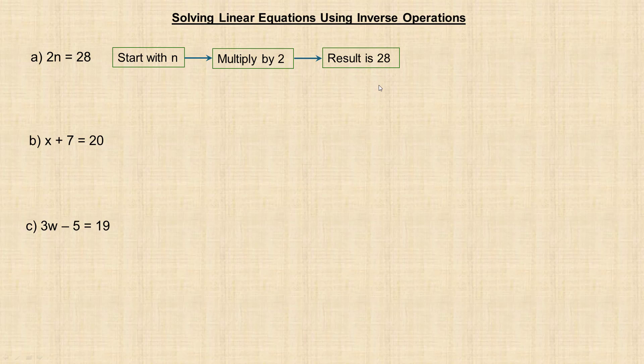To use inverse operations, we're going to start with the 28, and we're going to do the opposite of what we did to get the 28. The opposite of multiplying is dividing. So the opposite of multiplying by 2 would be to divide by 2. So what that looks like algebraically is we divide both sides by 2. You have to do the same thing to both sides. I can't just divide the left by 2 and not the right, because that changes it to be a different equation that would have a different answer.